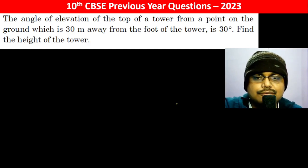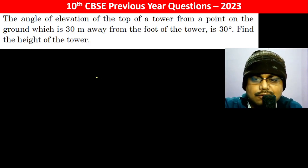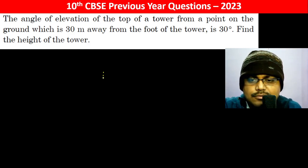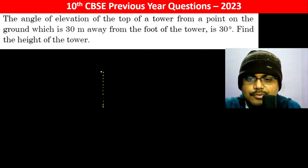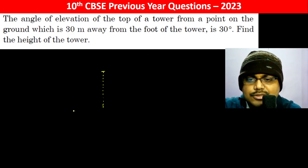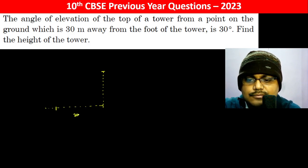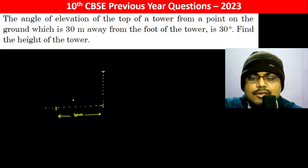The angle of elevation of the top of a tower from a point on the ground, which is 30 meters away from the foot of the tower, is 30 degrees.